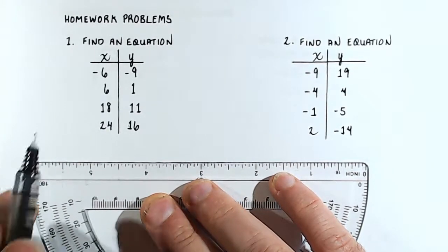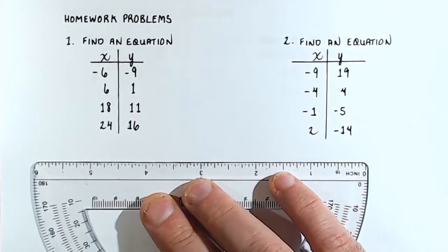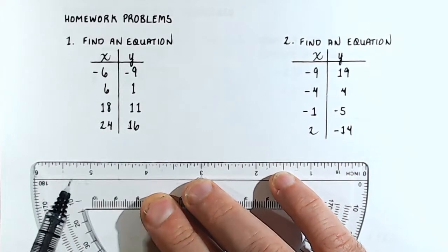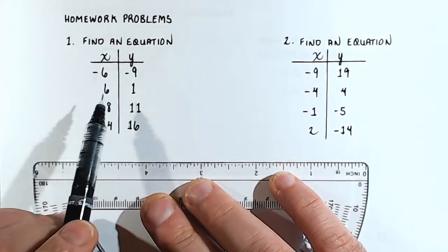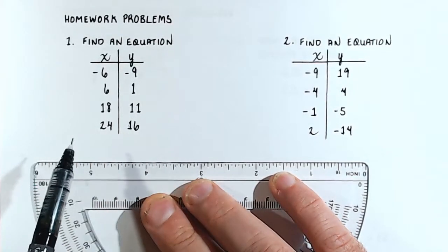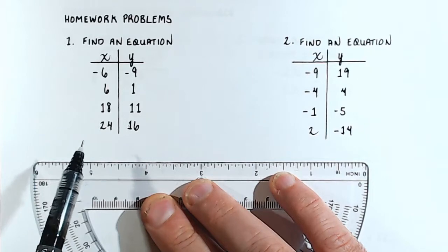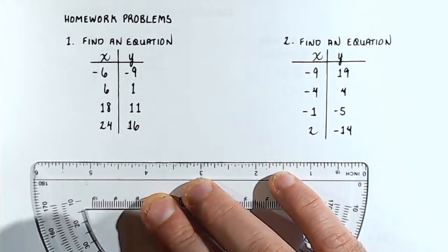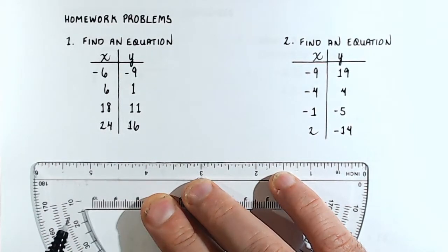So let's look at number 1. We're given a table and we're asked to find an equation. This is one of those situations where none of the values give us the y-intercept. So we don't know the slope, we don't know the y-intercept — we have to find both.